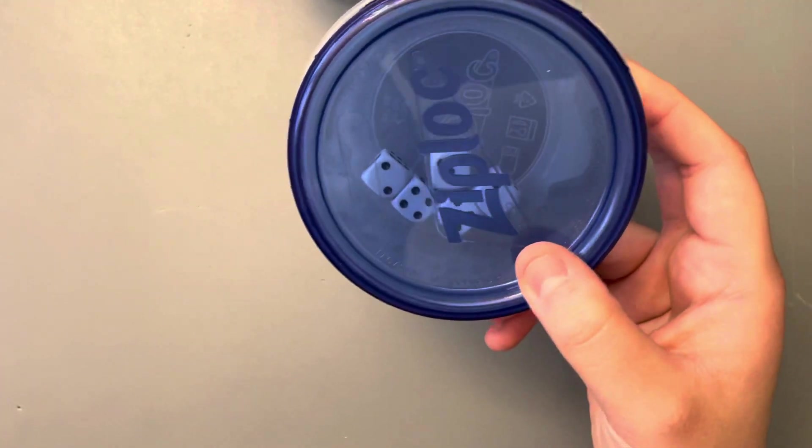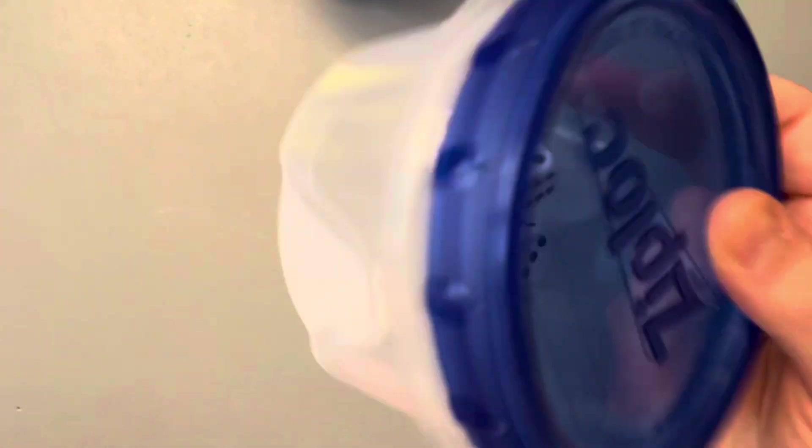Okie dokie. Now we're back to the dice. Brush some sugar away here. That's the dice. Let's shake it another 25 times. Counting: 1, 2, 3, 4, 5, 6, 7, 8, 9, 10, 11, 12, 13, 14, 15, 16, 17, 18, 19, 20, 21, 22, 23, 24, 25.